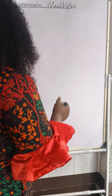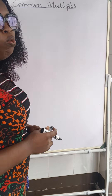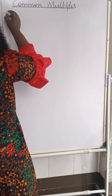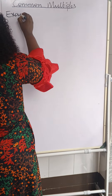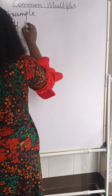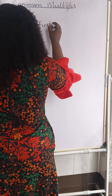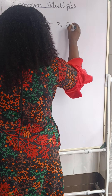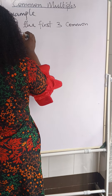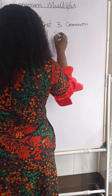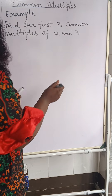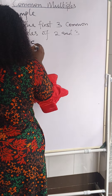Now let's look at this example. We have two and three, and we want to find the first three common multiples of two and three. Let's look at the solution.